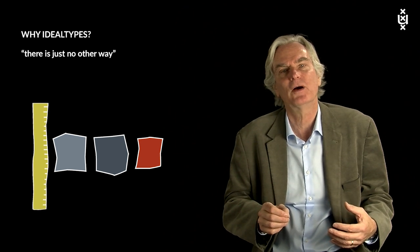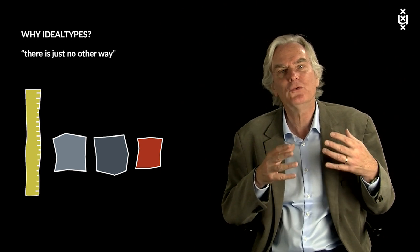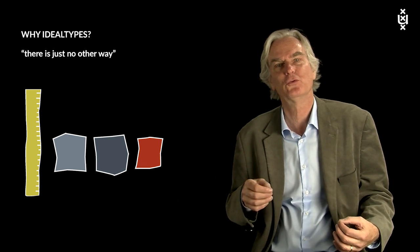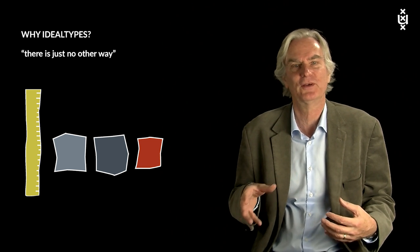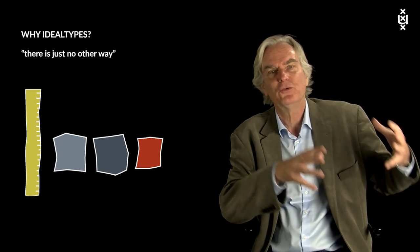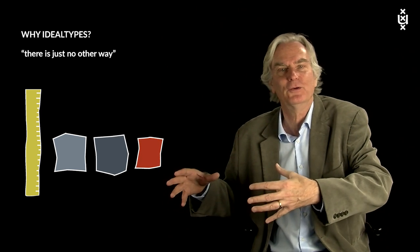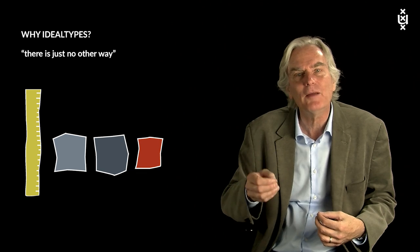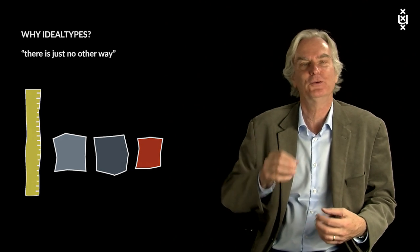Ideal types for example help us when we use the comparative method. You remember that method that according to Auguste Comte is so important in sociology. If you want to compare let's say the French revolution with the Russian revolution or with the Cuban revolution the first thing to do is to construct an ideal type of the revolution.